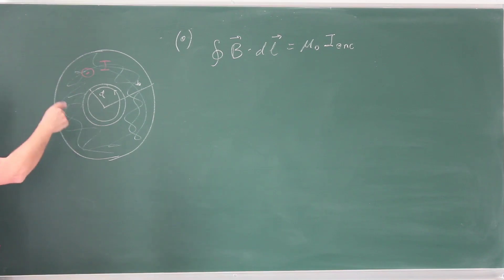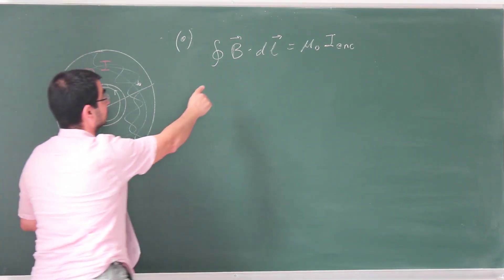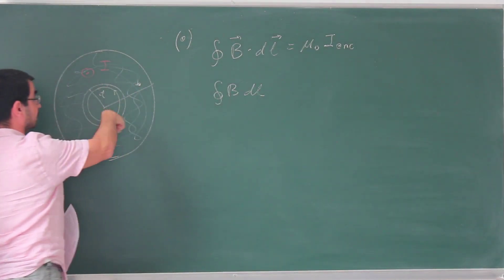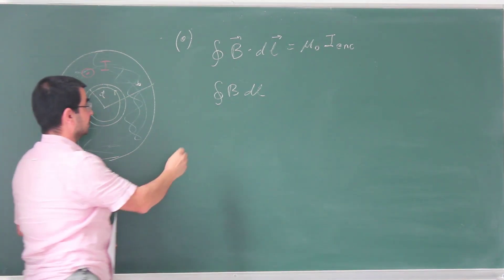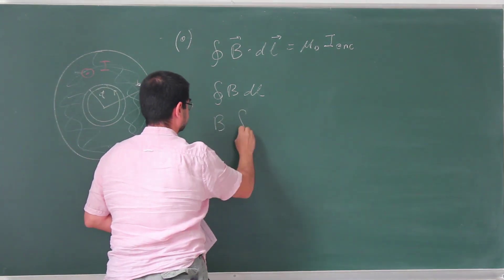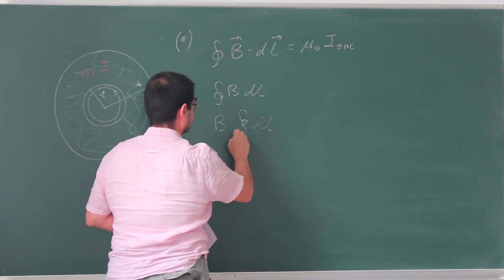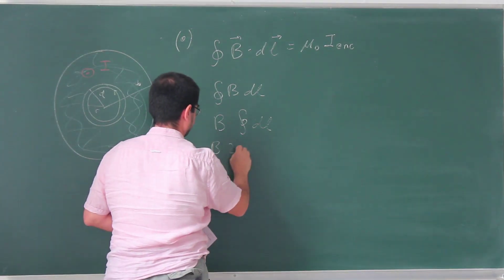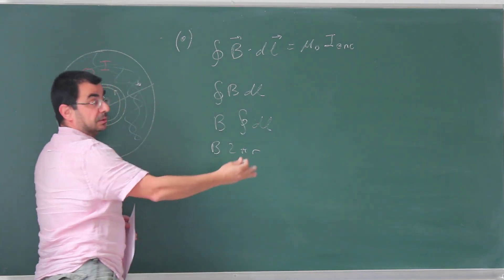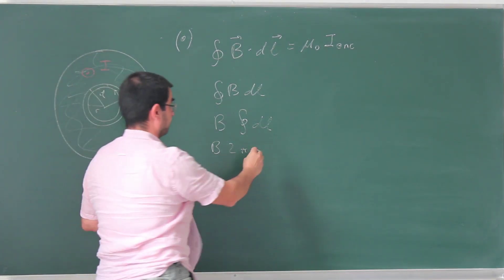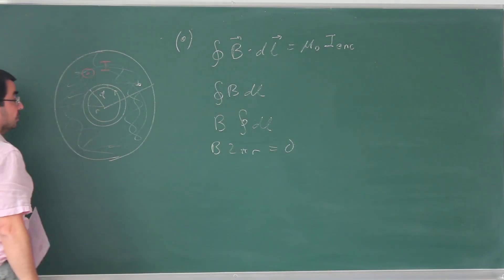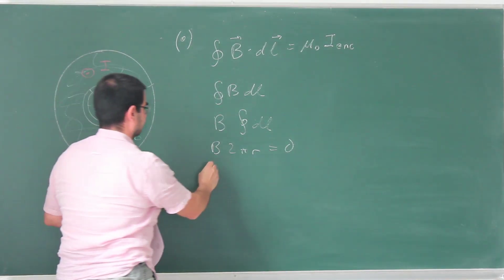Over this Amperian loop, the magnetic field has to be along this dl, so this dot product becomes a simple product, and then, because it's cylindrically symmetric, the magnetic field must be constant. I can take this out, integral dl, and this is of course just, if this is r radius, this is just 2πr. On the right hand side, we have 0, because there is no current enclosed within this smaller loop, then magnetic field is simply 0.